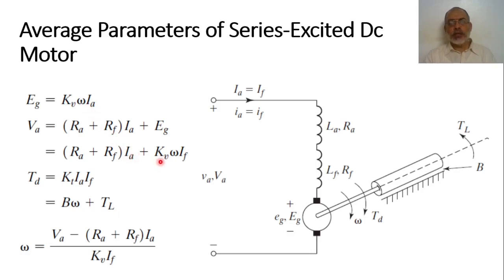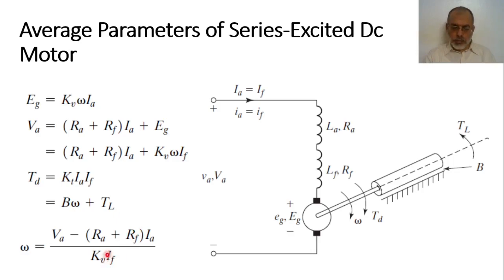Substituting the back EMF, EG = KV × Omega × Ia, we can derive the speed of the motor. The speed Omega equals Va minus (Ra + Rf) × Ia, all divided by KV × Ia. This is the speed equation for a series excited DC motor.